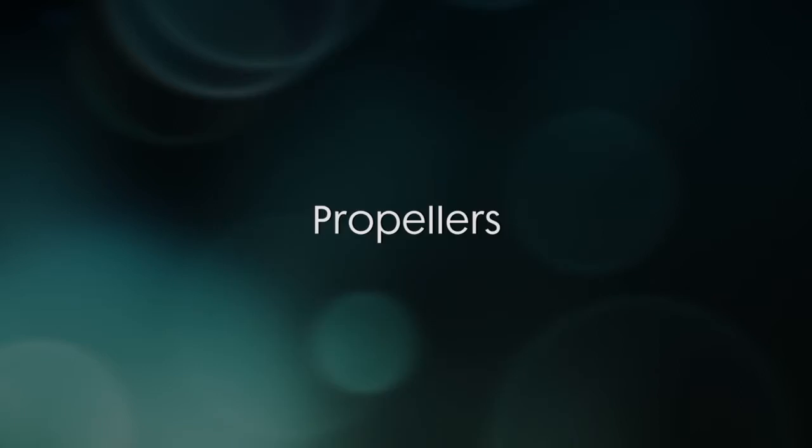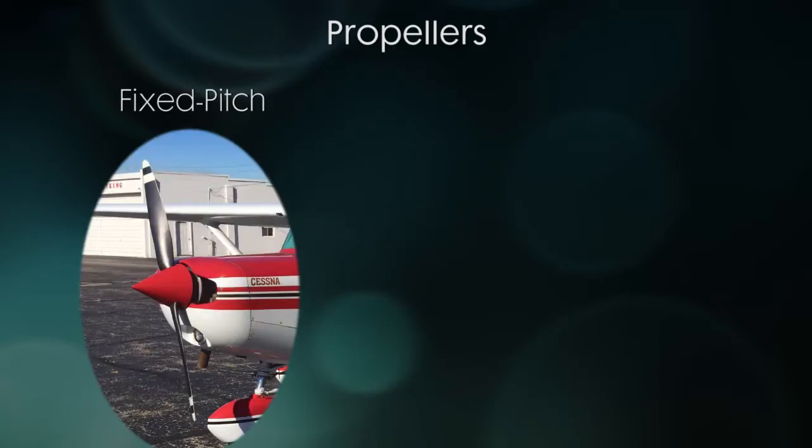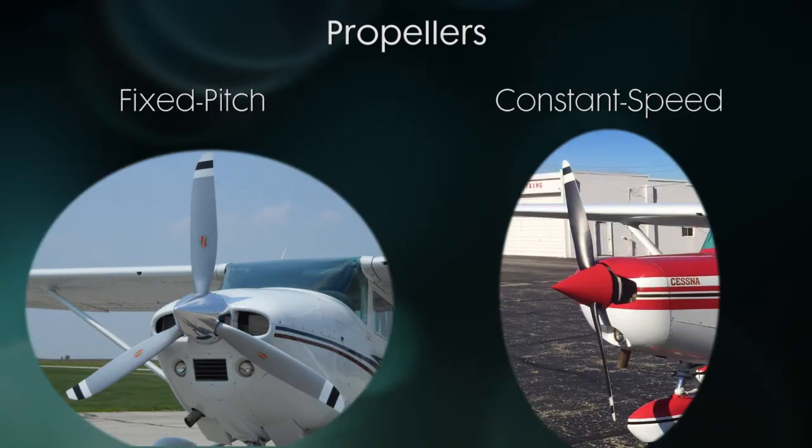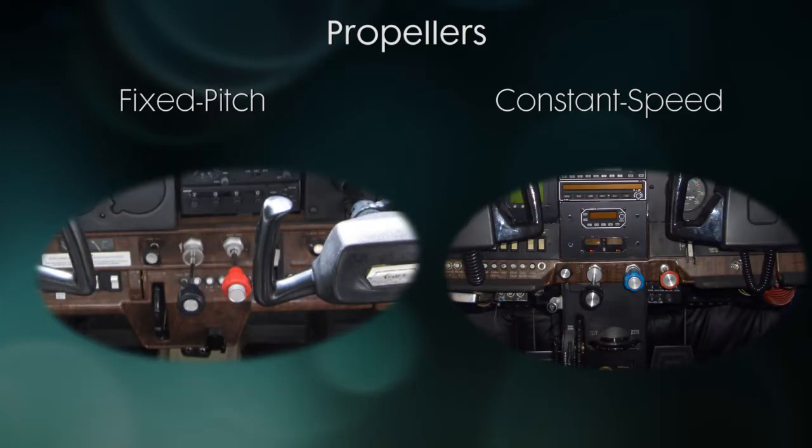There are two types of propellers in use today: fixed pitch and constant speed. You really can't tell the difference by looking at them from the outside, but if you take a peek inside, you can tell by the blue propeller knob that it's a constant speed propeller.